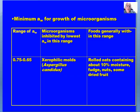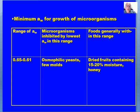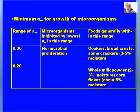Getting down to some very low ranges — nothing you need to know for an exam, but it provides information that might be useful when you work in industry or teach a food microbiology class. At 0.3 to 0.2, there is no microbial proliferation. Typically these are products that are very, very dry in nature.